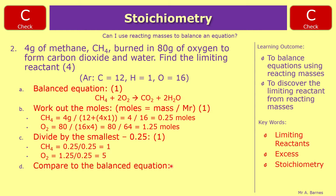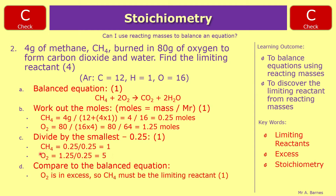The final step is to compare to the balanced equation. I have 1 methane matching the balanced equation, but down here I've got 5 oxygens compared to 2 in the balanced equation, which means oxygen is in excess. So CH₄ must be the limiting reactant. You get one mark for the balanced equation, one for the moles, one for dividing by the smallest, and one for identifying the limiting reactant.